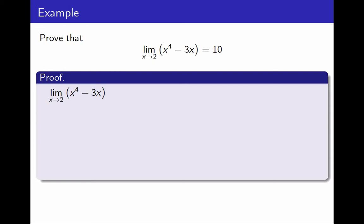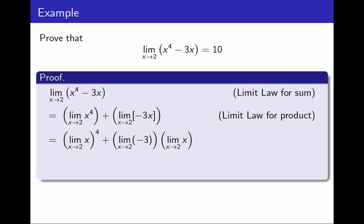So using the limit law for sums, I can write this limit as the sum of two limits. And now every piece is the product of functions. Minus 3x is minus 3 times x, and x to the 4th is x times x times x times x. So using the limit law for product, I can write each of these limits as a product of limits.